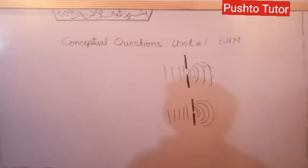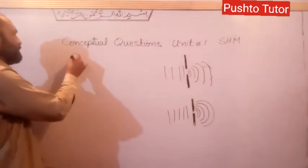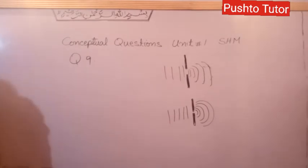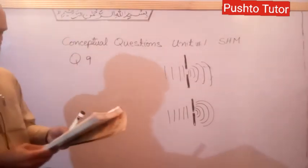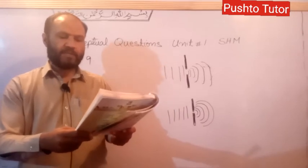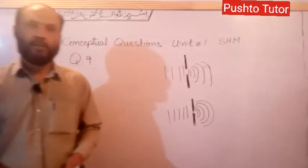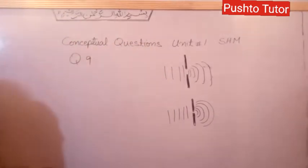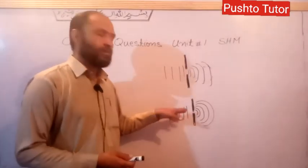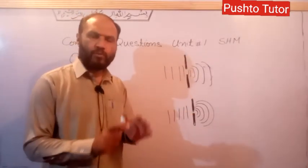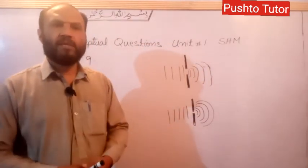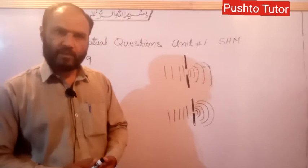Question number nine. What is the effect on diffraction if the opening is made small? Diffraction is the spreading out of a wave when it passes through a small opening.